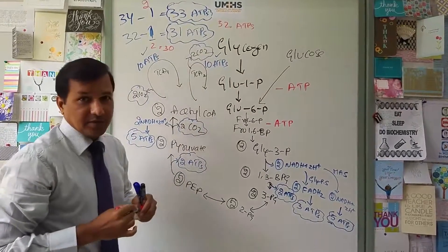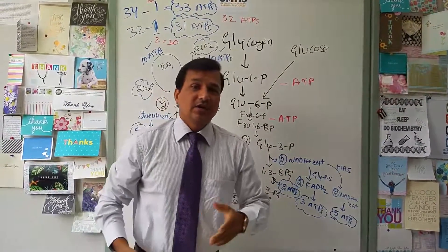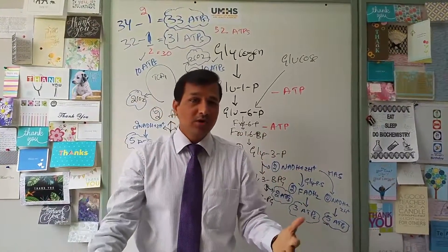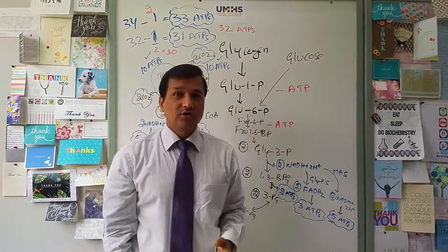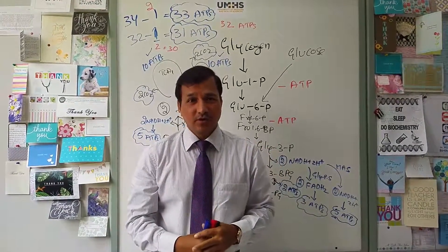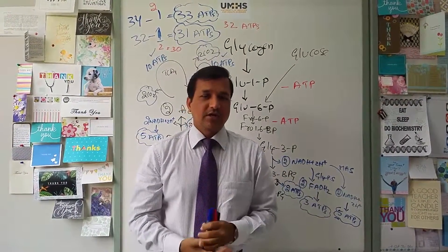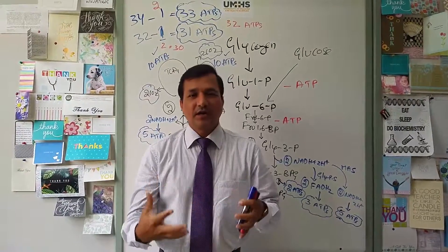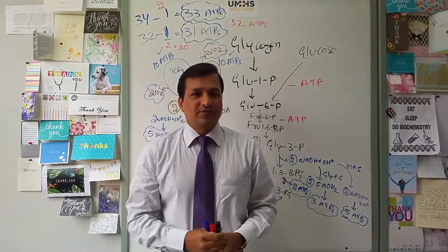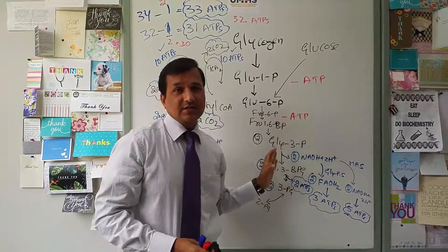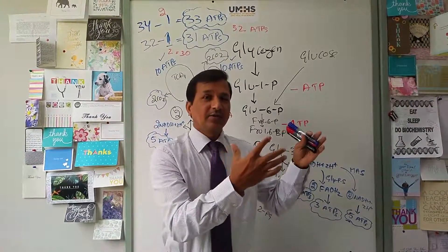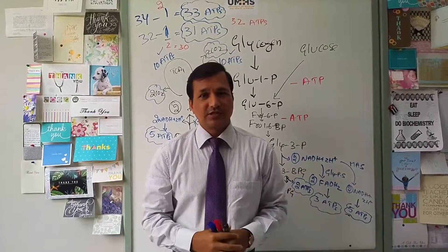Oxidation of glucose-1-phosphate from glycogen is worth 1 ATP more than oxidation of free glucose from glycolysis. That covers the ATP calculation from glycogen breakdown (glucose-1-phosphate) and complete oxidation of glucose to 6 CO₂. Thanks for watching.